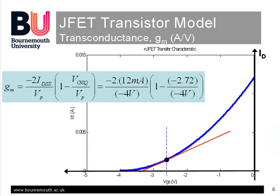For the example problem, we have a saturation drain current of 12 mA, a pinch-off of minus 4 volts, and our DC analysis has shown that the circuit will operate with a DC bias of minus 2.72 volts on the gate. Substituting these values gives us the result that the transconductance is 1.9 mA of drain current per volt of gate signal, using either a calculator or MATLAB.